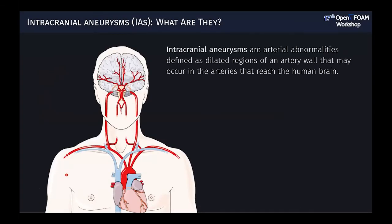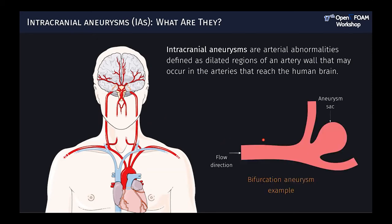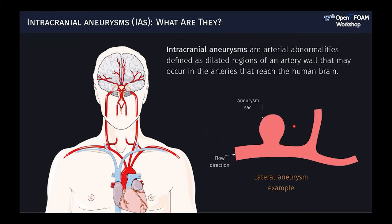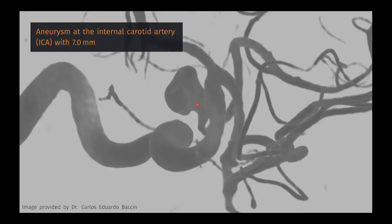Let me introduce you to intracranial aneurysms. Aneurysms in general are pathological dilatations of the arteries of the human vascular system. Intracranial aneurysms particularly occur in the arteries that reach the brain in a region called the Circle of Willis, as you can see in this picture. The most common form occurs in a circular shape, normally at the bifurcations of the arteries, but they also occur laterally. A typical example is shown here — a medium-sized aneurysm of seven millimeters. For comparison, arteries in the brain have around two to four millimeters in diameter.